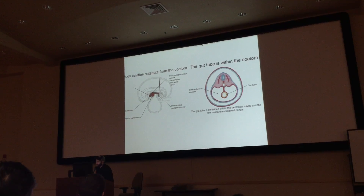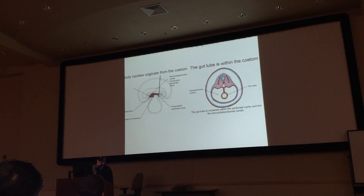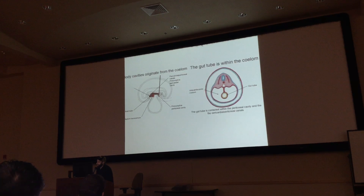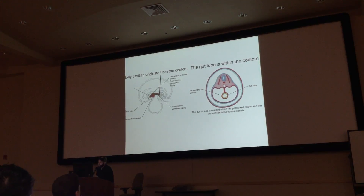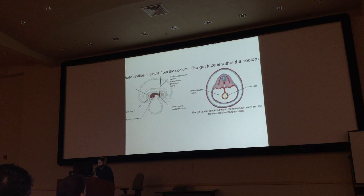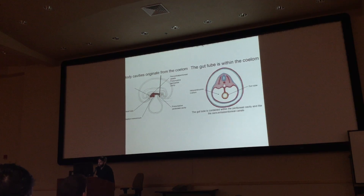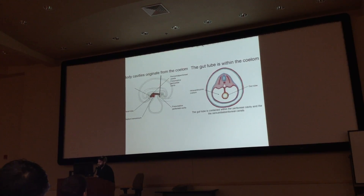He mentions that the gut tube is contained in the peritoneal cavity and the pericardioperitoneal canals, and he shows that the gut tube itself is sitting inside the intraembryonic coelom. He mentions that a lot in class, so it's pretty important.